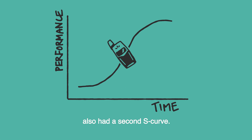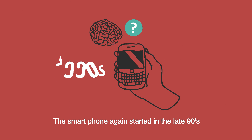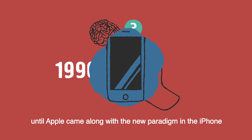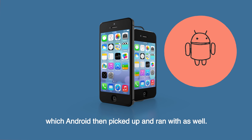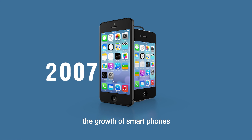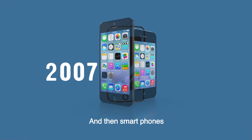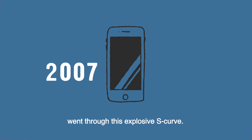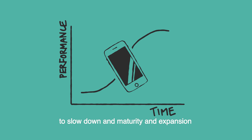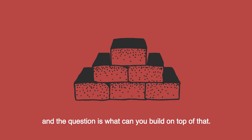In parallel, mobile phones also had a second S-curve. Smartphones started in the late 90s, but though people had things you could technically call smartphones, no one really used them as such until Apple came along with a new paradigm with the iPhone, which Android then picked up and ran with. Though the iPhone was launched in 2007, the growth of smartphones really only exploded three, four, or five years later. Today smartphones are about halfway through that S-curve, from crazy idea to explosive growth to slowdown and maturity.